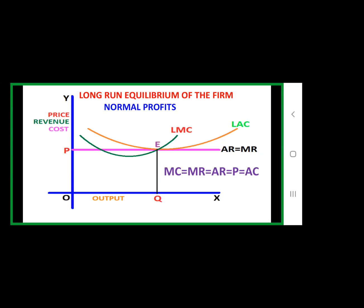Profit is zero. Abnormal profit is normal. So, this is the equilibrium — long run equilibrium of the firm under perfect competition condition with normal profits.